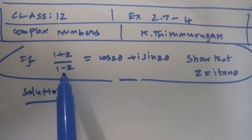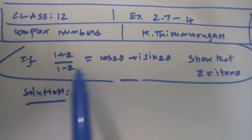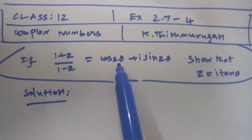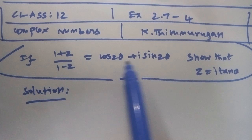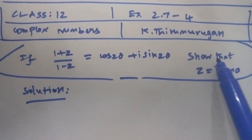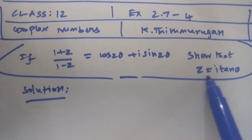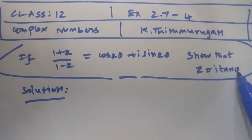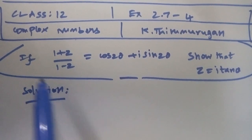If (1 + z) / (1 − z) = cos 2θ + i·sin 2θ, show that z = i·tan θ.